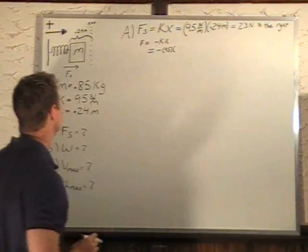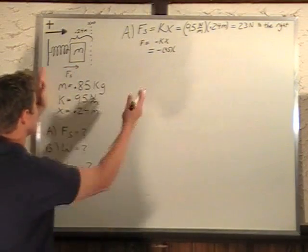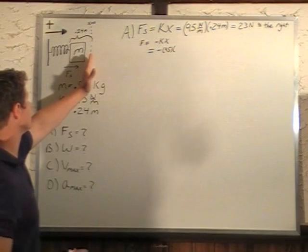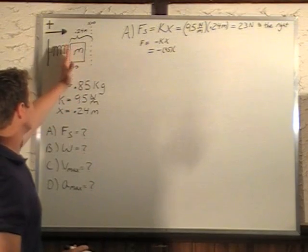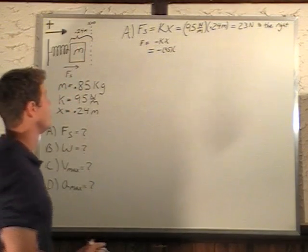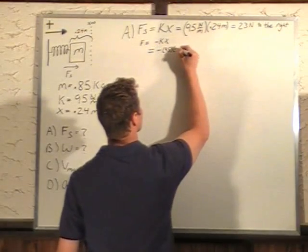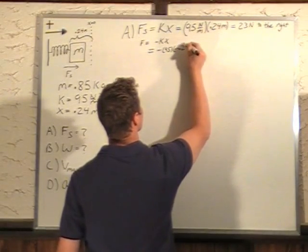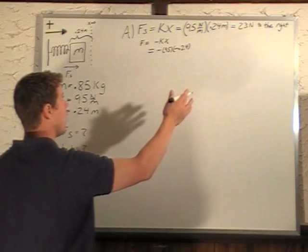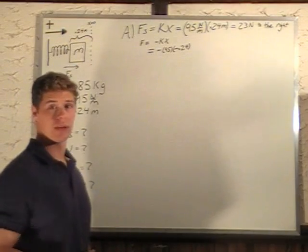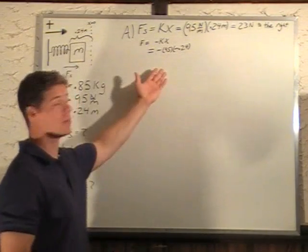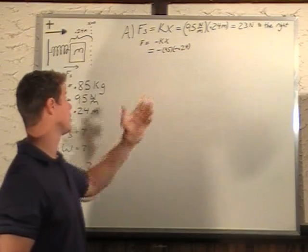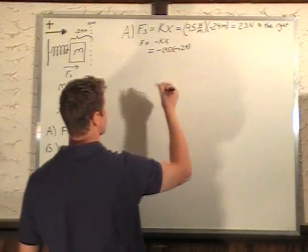And X, in this case though, is actually negative, right? Because X = 0 is here, so if we push backwards, we have negative 0.24 meters there. So we'll get the same answer, and the actual direction will come out in our positive or negative. So it might be easier to do it this way, where now we have that negative times that negative gives you a positive.